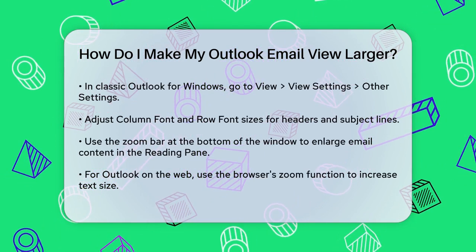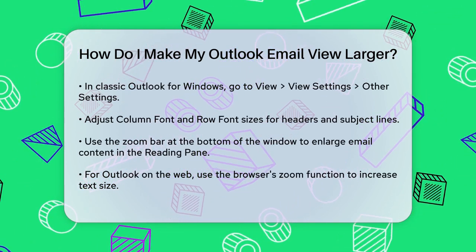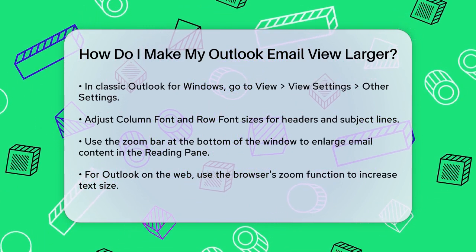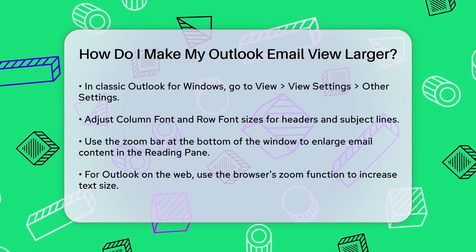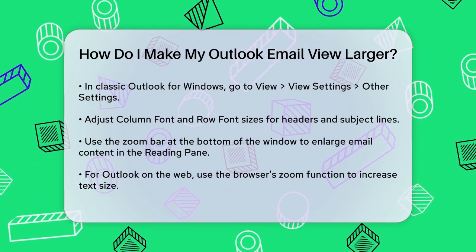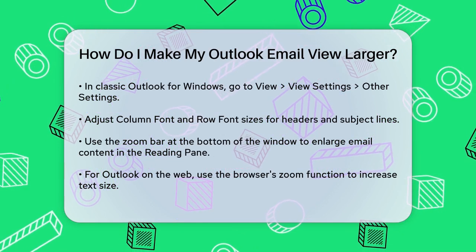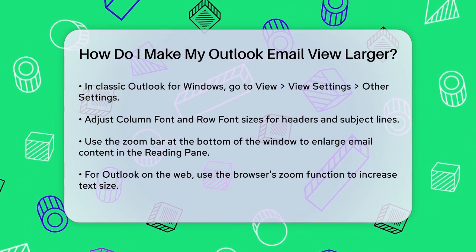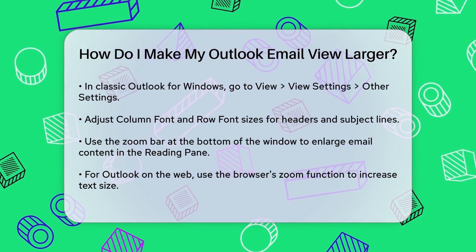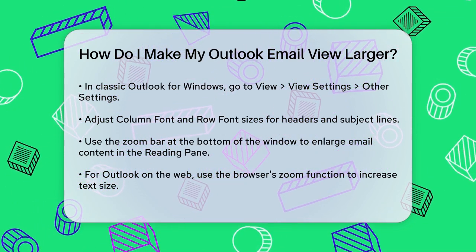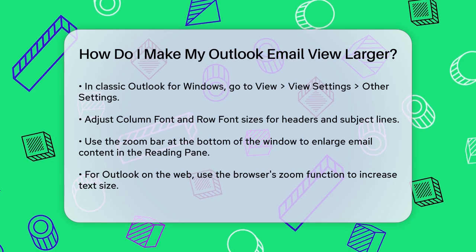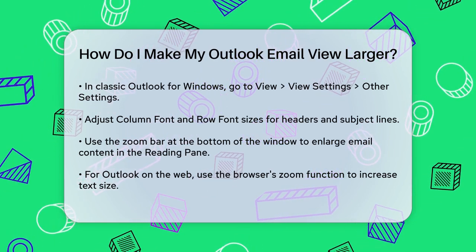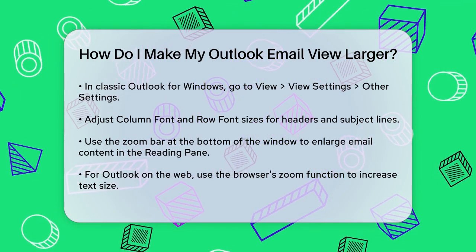You can also select the percentage you prefer and check the Remember My Preference box to save your settings. For Outlook on the web, things are a bit simpler. When reading emails, you can use your browser's Zoom function to make the text larger. For example, in Microsoft Edge, go to Settings and More, then Zoom and adjust the size as needed. When composing emails, you can change the font size directly in the Compose pane by clicking on the Font Size option at the bottom of the pane and selecting your preferred size.